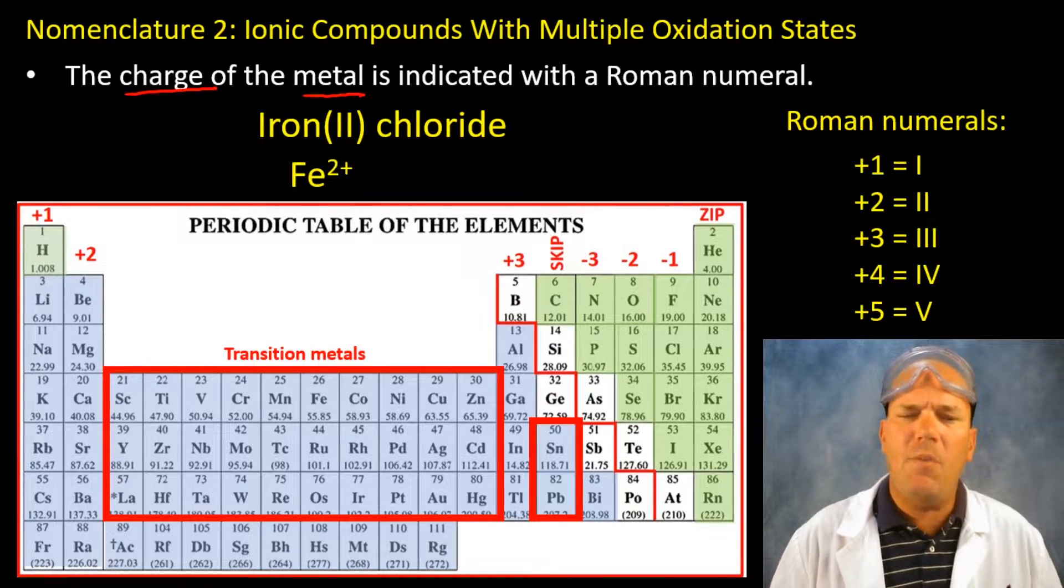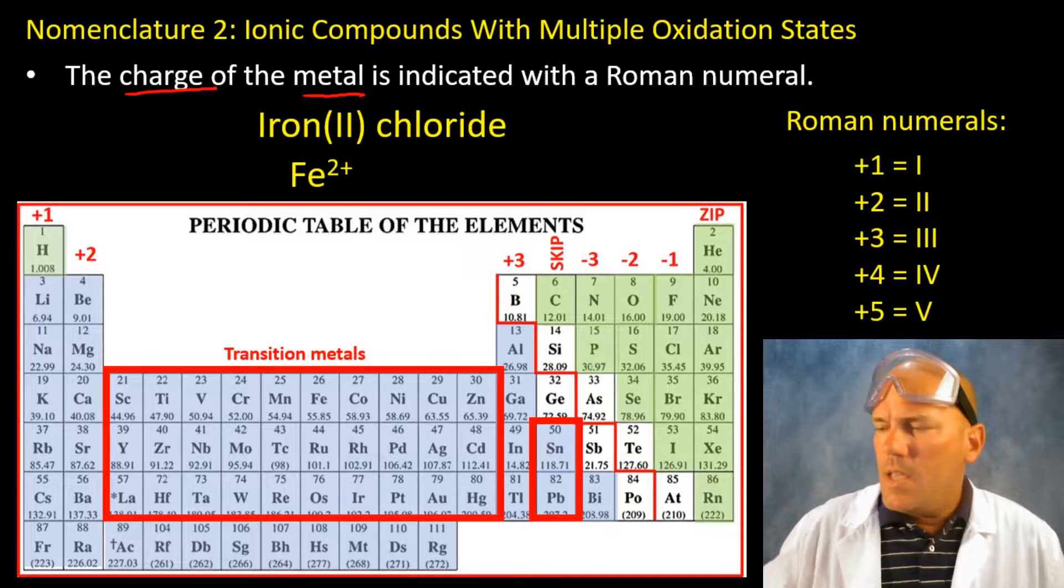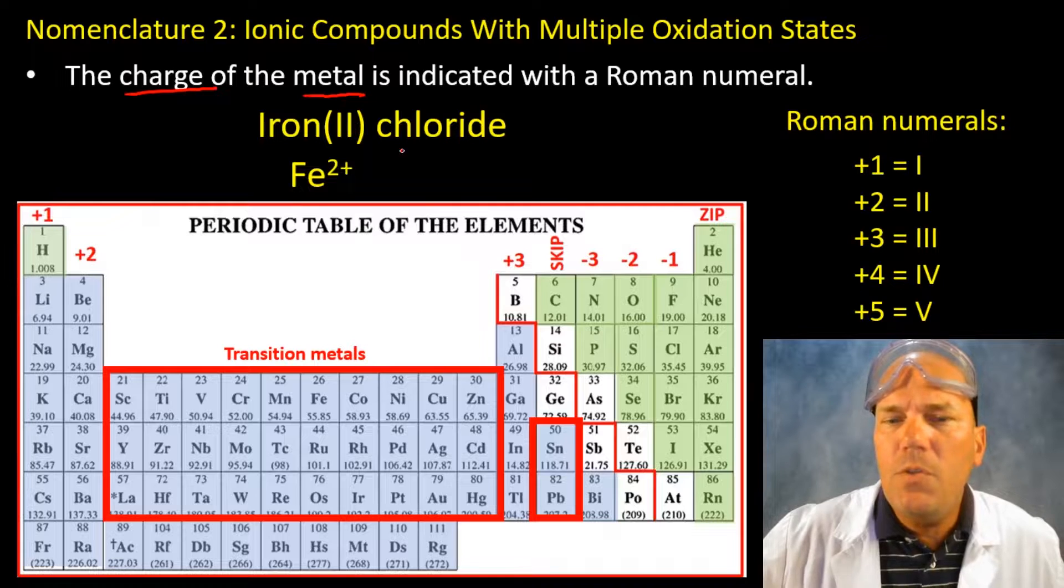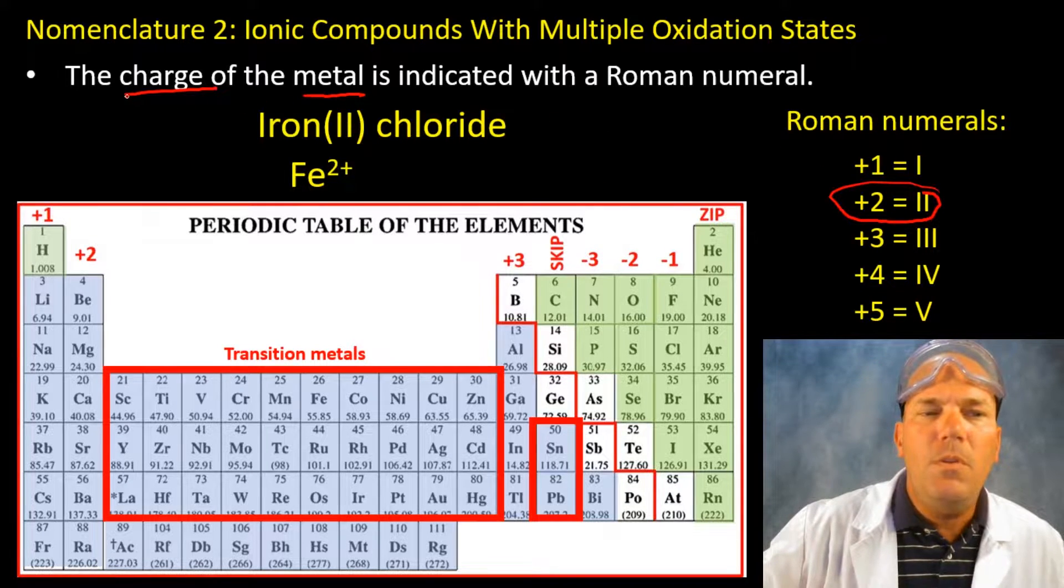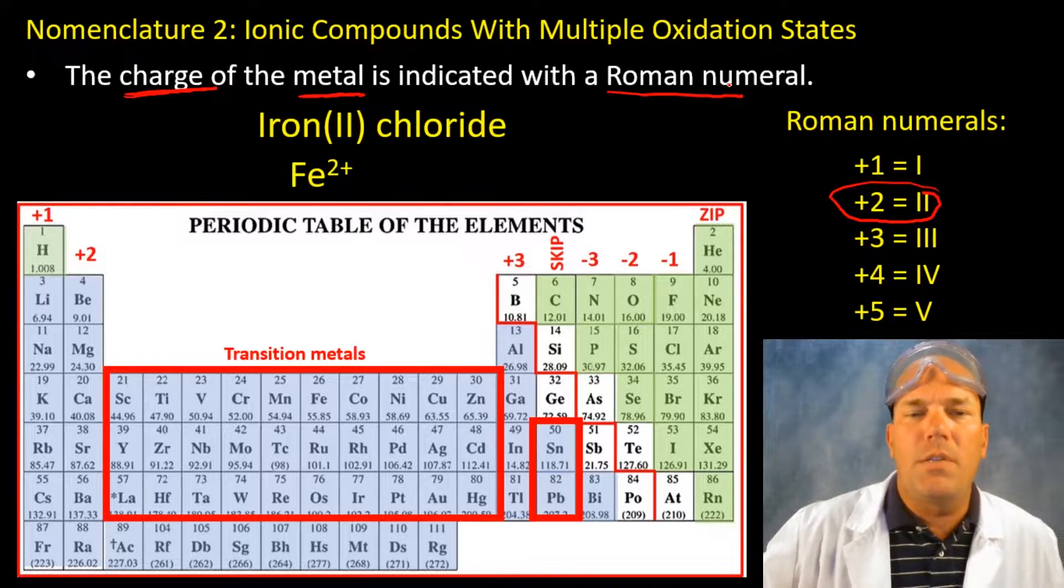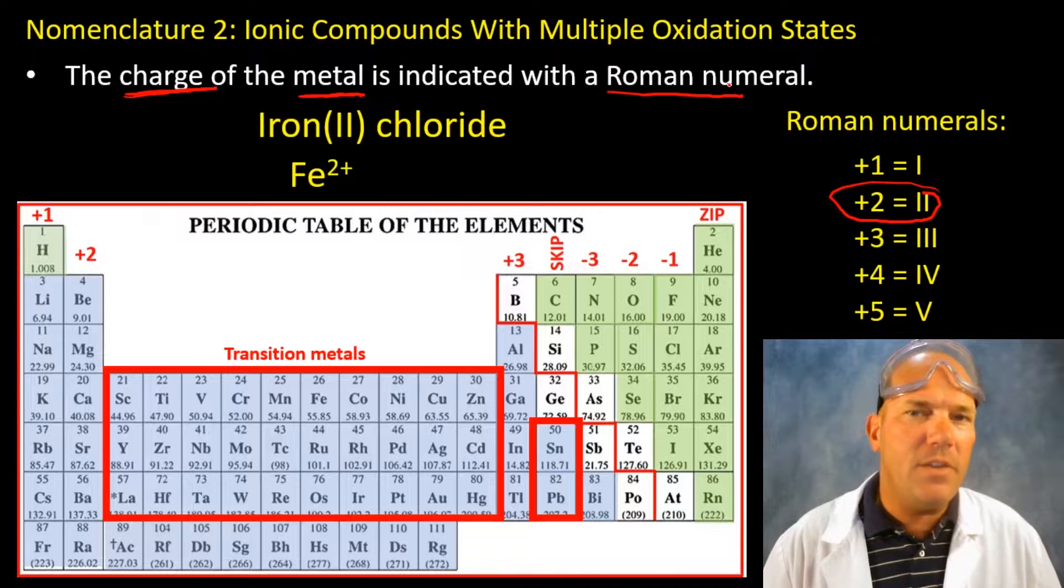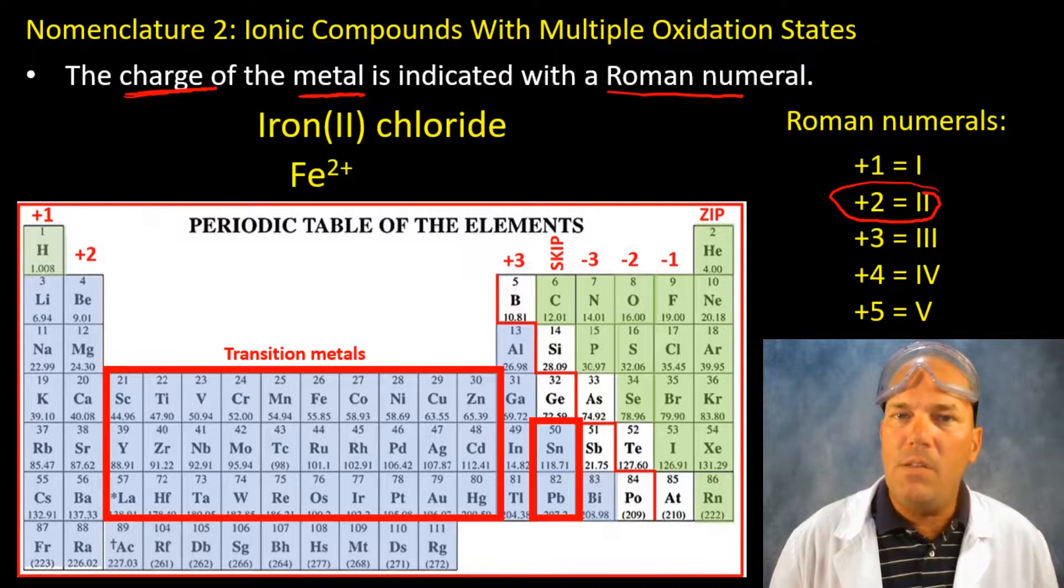And you might be saying well how do you know that? Because in this name a two roman numeral is used and the roman numeral, underline it again, is the charge. It's not how many irons are in the compound. It's the charge of the metal cation.